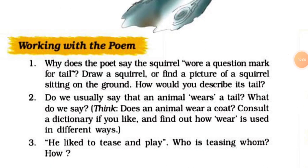First question — working with the poem: Why does the poet say the squirrel wore a question mark for tail? Draw a squirrel or find a picture of a squirrel sitting on the ground. How would you describe its tail? Answer: The tail of the squirrel is turned in the shape of a question mark. Therefore, the poet called it a question mark for tail.